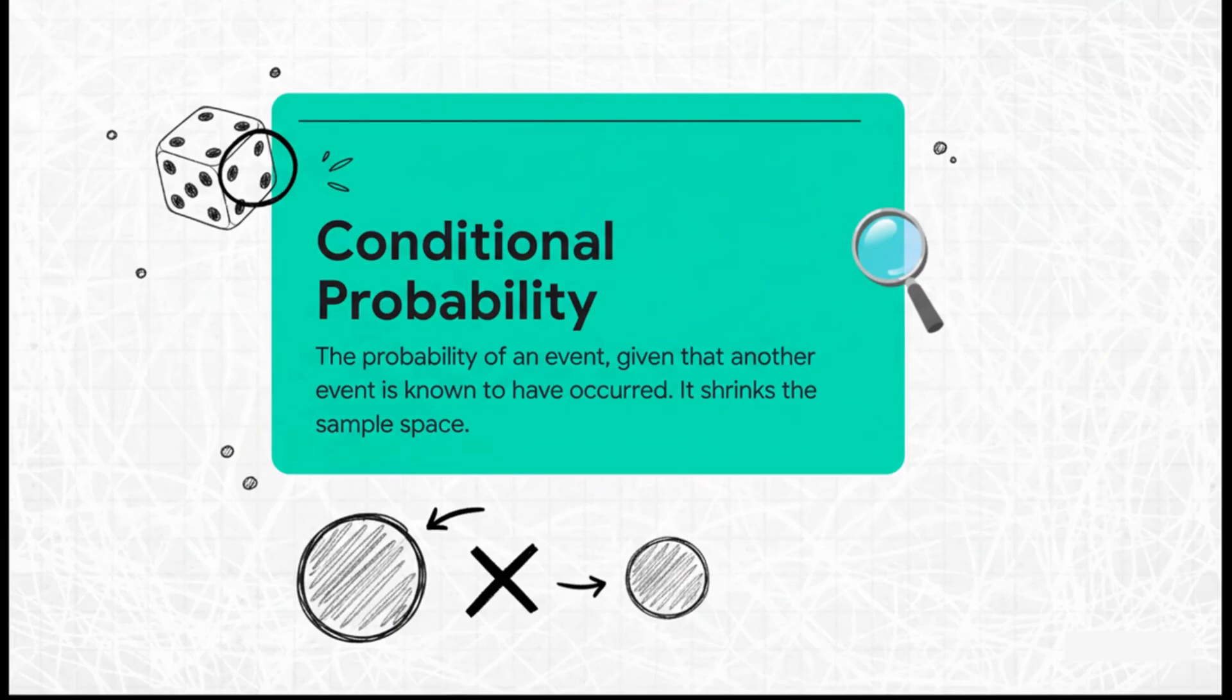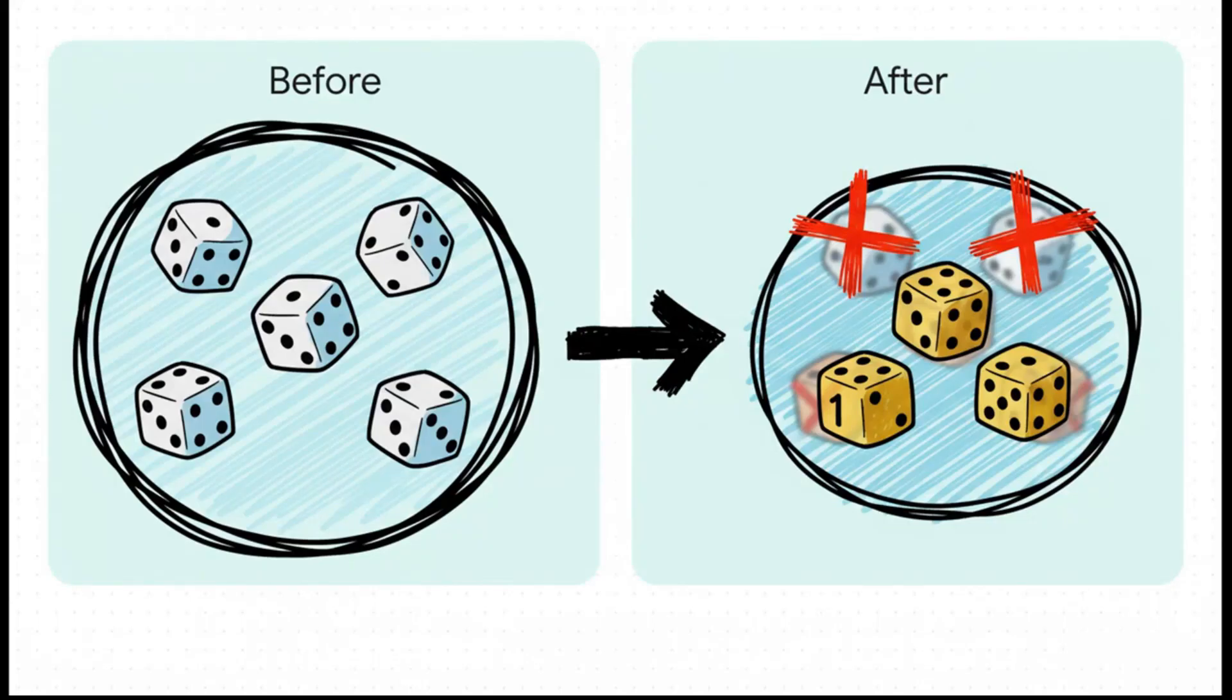It absolutely does. And this gets us to the idea of conditional probability. It's the probability of something happening given that you already know something else is true. The key insight is right there on the screen. New information literally shrinks your sample space. It lets you cross off possibilities that you now know are impossible. And this just shows it perfectly. Before the clue, our whole world was those six numbers. The odds of rolling less than 4 were 3 out of 6, which is 1 half. But as soon as I told you the roll was odd, our universe of possibilities just shrank to 1, 3, and 5. And in that new, smaller world, the outcomes that are less than 4 are 1, 3. So the probability actually jumped from 1 half all the way up to 2 thirds. That is conditional probability in action.